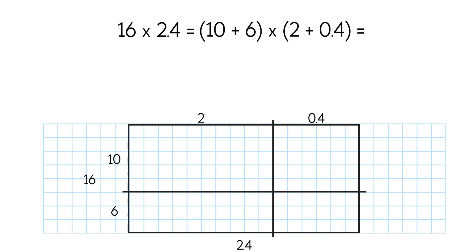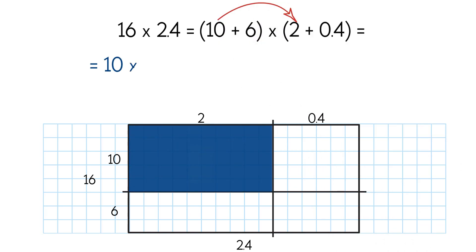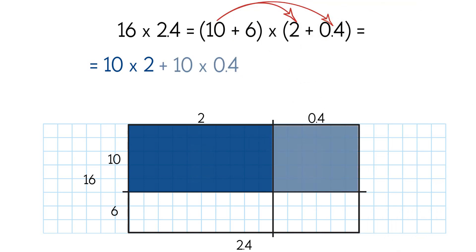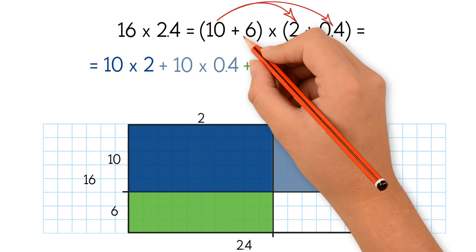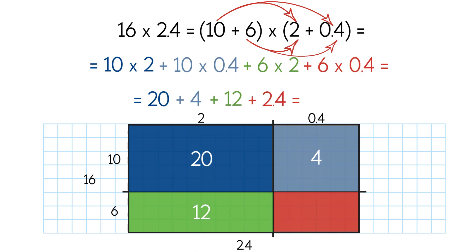Now we can multiply using the distributive property of multiplication. We multiply 10 times 2, which is the area of the first smaller rectangle. Next, we multiply 10 times 0.4, which is the area of the second smaller rectangle. Now we multiply 6 times 2, which is the area of the third smaller rectangle. Finally, we multiply 6 times 0.4, which is the area of the fourth smaller rectangle. We get 20, 4, 12, and 2.4 as the partial products. We add them up to find the product of 16 and 2.4. So the answer is 38.4.